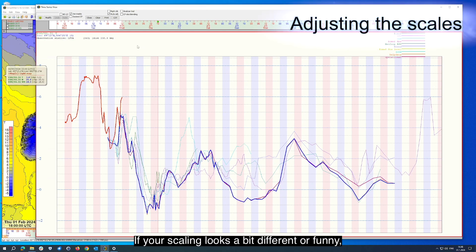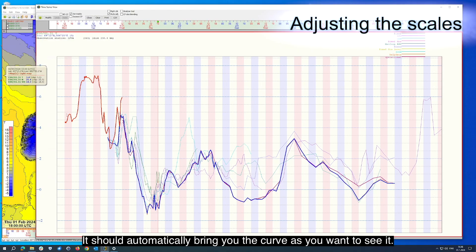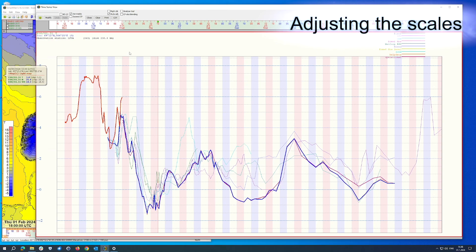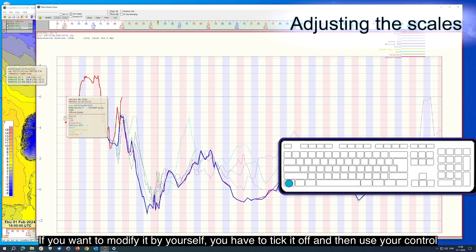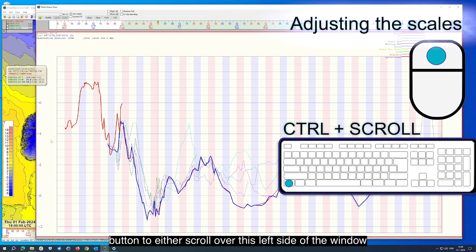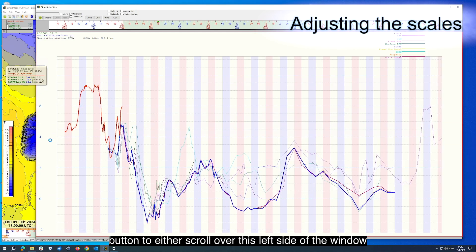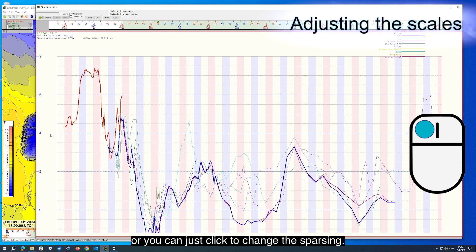If your scaling looks a bit different or funny, you can see if your auto adjust box is ticked on. It should automatically bring you the curve as you want to see it. If you want to modify it by yourself, you have to tick it off and then use your control button to either scroll over this left side of the window, or you can just click to change this parsing.